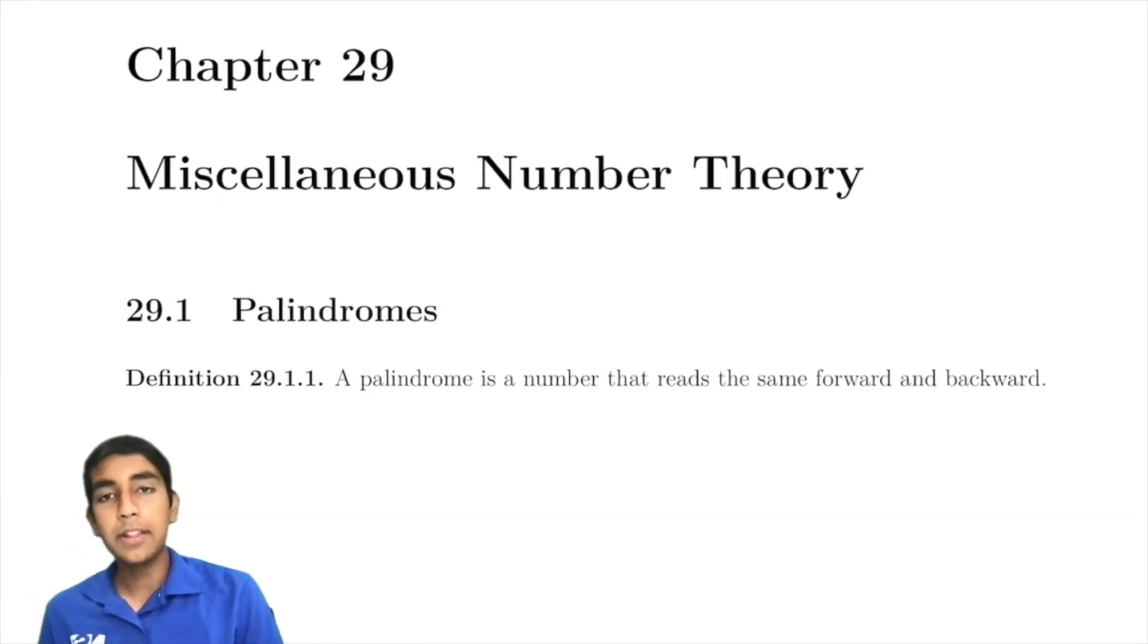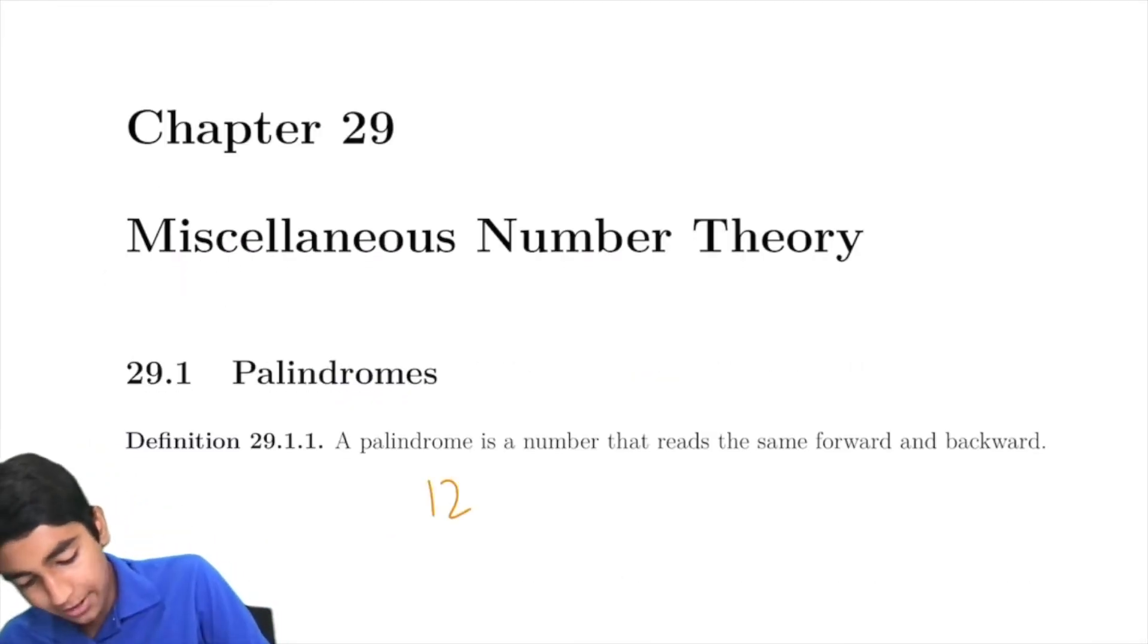A palindrome is a number that reads the same forward and backward. For example, 12321 is a palindrome.